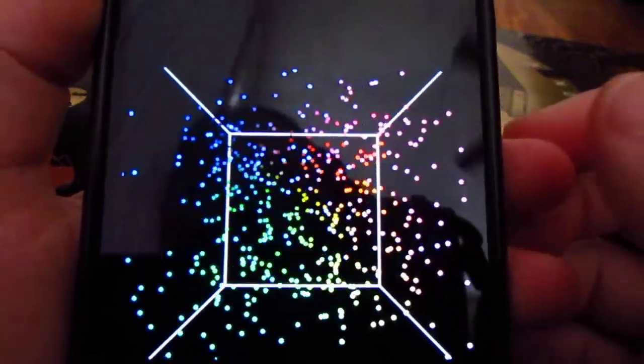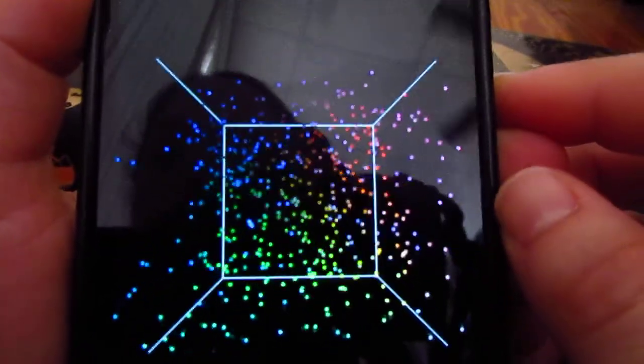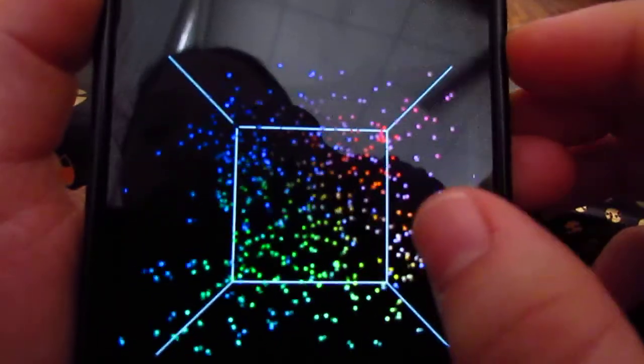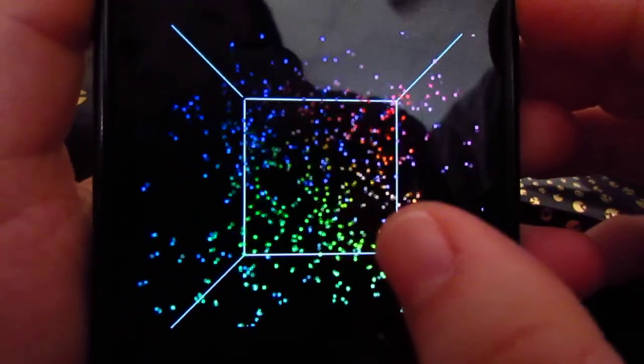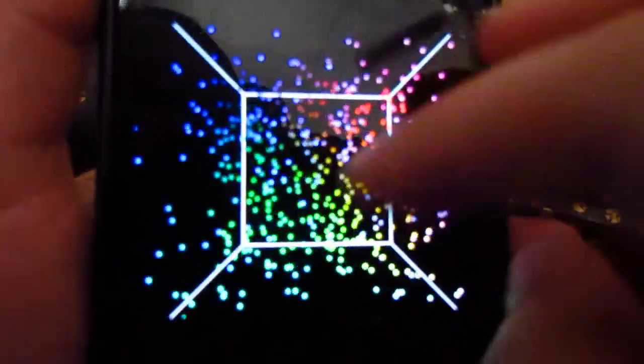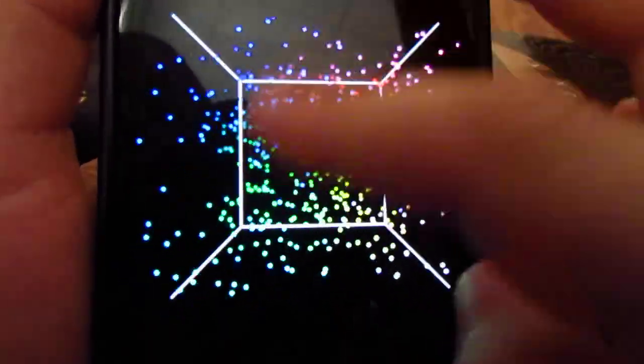So this is my first shot at an Android app. Let me just show you what's going on here. We've got a 3D matrix of points, and they're all contained in this 3D cube here.